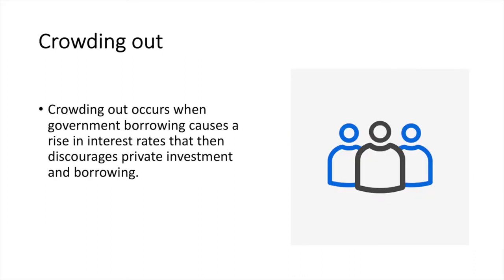Crowding out occurs when government borrowing causes a rise in interest rates that then discourages private investment and borrowing. If the government chooses to finance a budget deficit by borrowing from the public, it can reduce the amount of loanable funds available for others to borrow and will drive up the interest rate, thus discouraging borrowing.